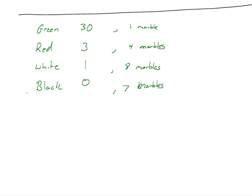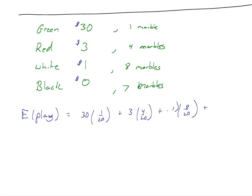So my expected value of playing the game would again be the average return of this game for me as a player. When I do this, the outcomes are: $30 with a probability of 1 out of 20, $3 with a probability of 4 out of 20, $1 with a probability of 8 out of 20, and $0 with a probability of 7 out of 20.